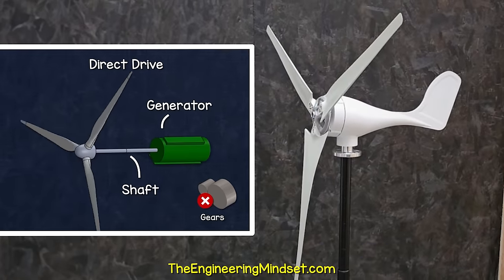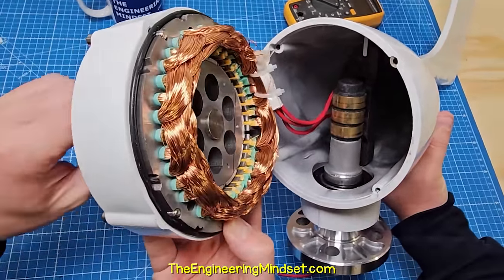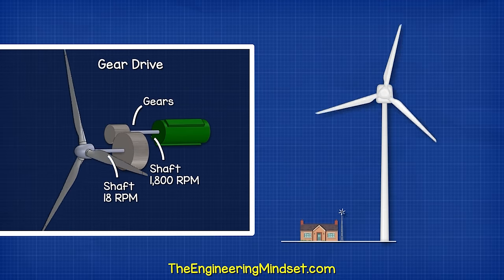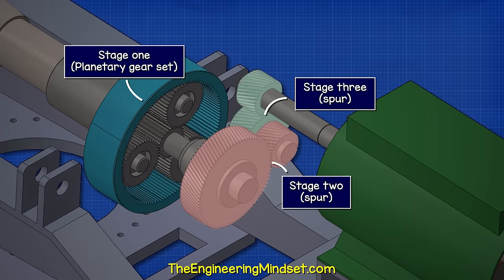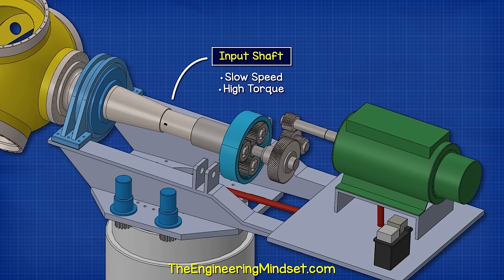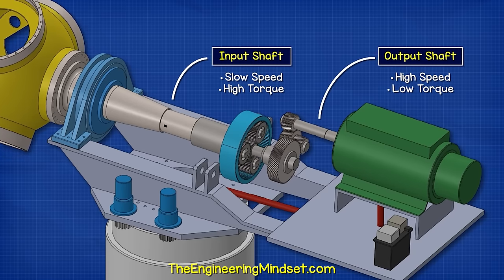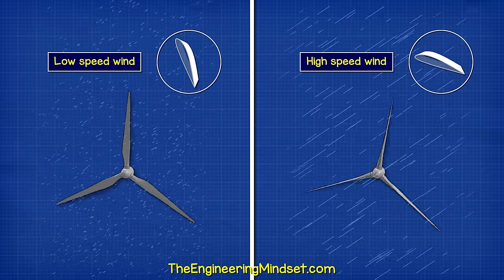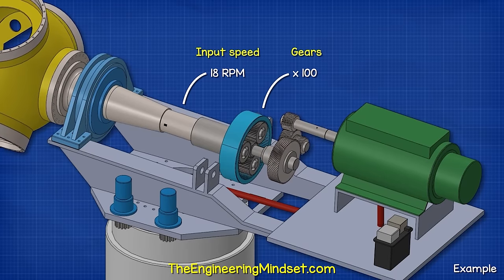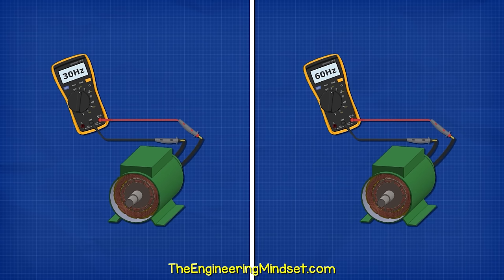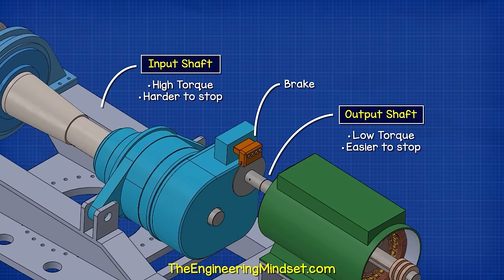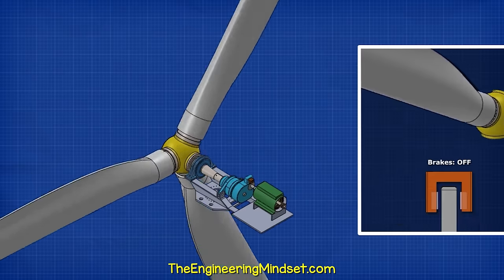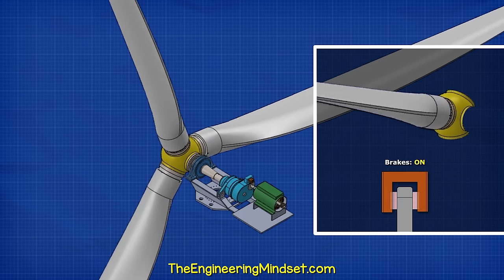Small wind turbines are typically direct drive, often using permanent magnet generators. Large wind turbines turn much slower, so we use gears to increase the speed of the rotor to produce sufficient power and output frequency at the generator. Typically we find a three-stage gearbox consisting of a planetary gear set and then two spur stages. The input shaft is low speed but high torque; the gearbox converts this into high speed, low torque. The rotational speed is controlled by the pitch of the blades, so the input might be just 18 rpm and the output 1800 rpm. We have a hydraulic disc brake at the back of the gearbox because the shaft is low torque and easier to stop. The blades are first used to stop the rotation, then the brakes hold it in place — for example, during maintenance.